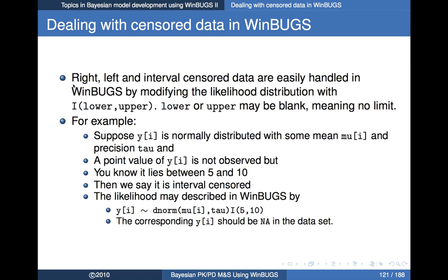WinBugs provides fairly simple notation for dealing with an appropriate modification for the likelihood. If you have some kind of censoring — right, left, or interval — you can handle them in WinBugs by modifying the likelihood distribution with a modifier function. It's just a capital I, with two arguments — lower and upper — which are lower and upper bounds for censoring. Lower or upper can also be blank, which is synonymous with no limit. So if you leave lower blank for a distribution that normally goes from minus infinity to infinity, that's equivalent to putting in minus infinity.